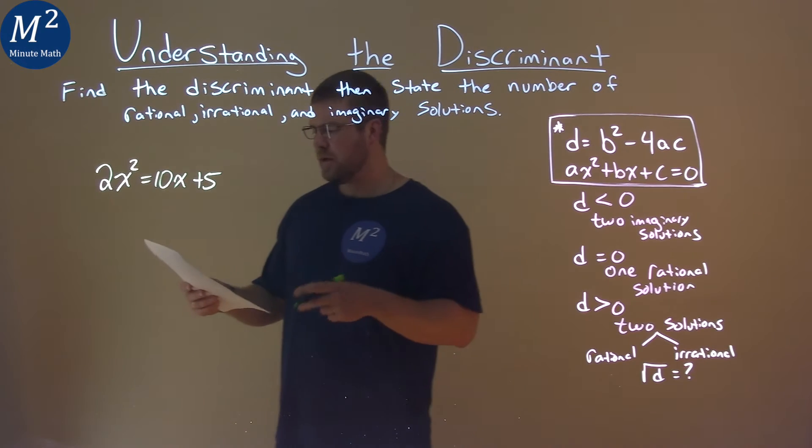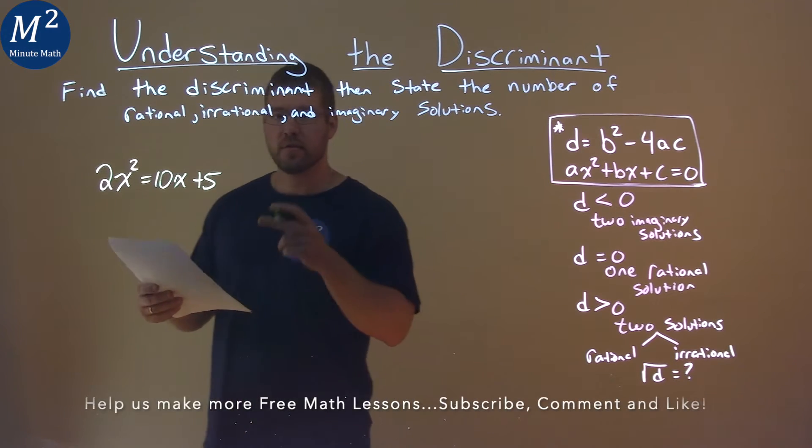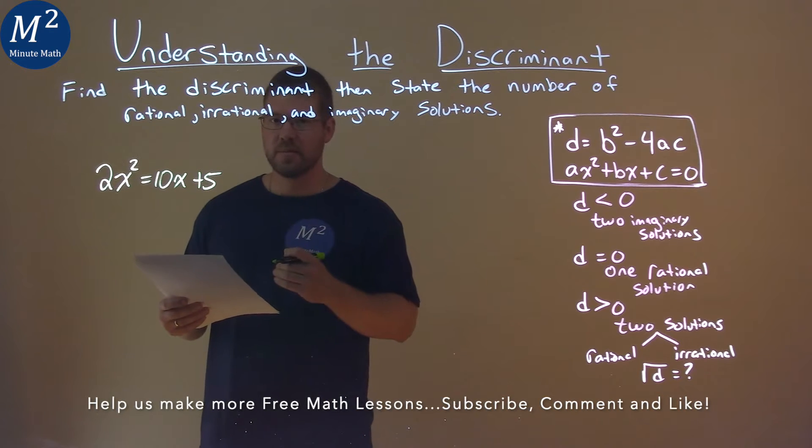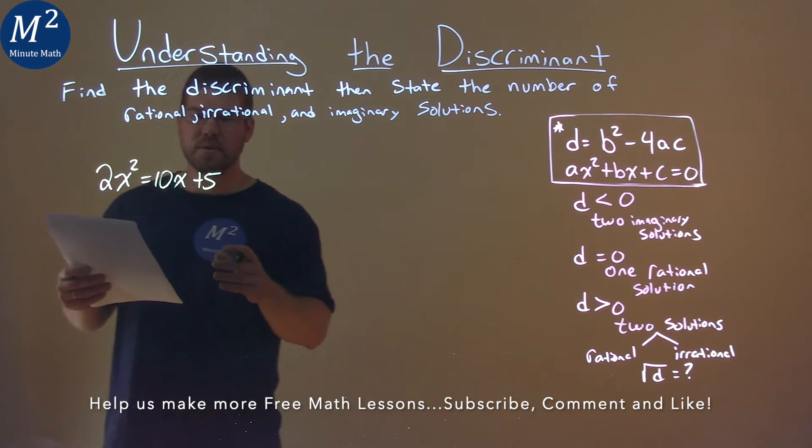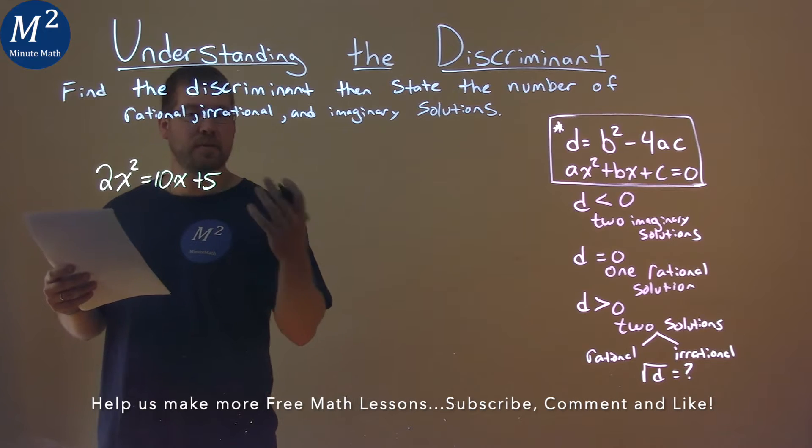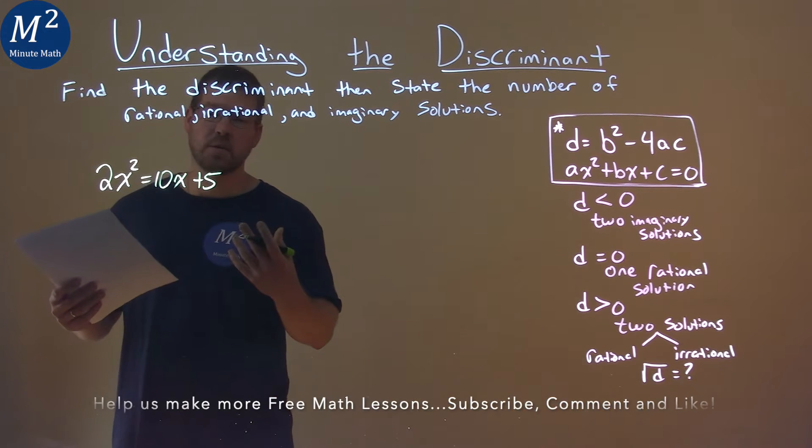We're given this problem right here: 2x squared equals 10x plus 5, and we need to find the discriminant. Well, first thing I want to do is subtract 10x and 5 to both sides to get this equation equal to 0.